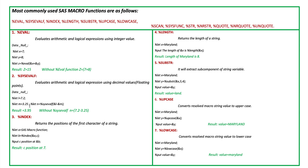We create another new macro variable N using %SYSEVALF. Inside the parentheses we use &L - &M, that means 7.2 minus 3.25. With %SYSEVALF the result becomes 3.95. But without %SYSEVALF, the value of N becomes the literal string '7.2 - 3.25'.